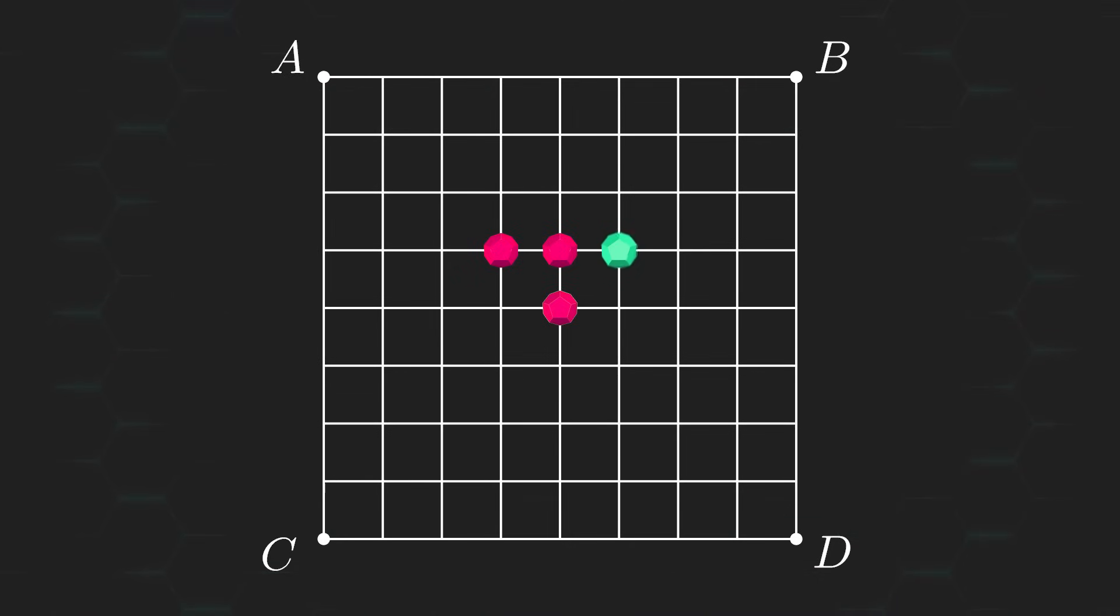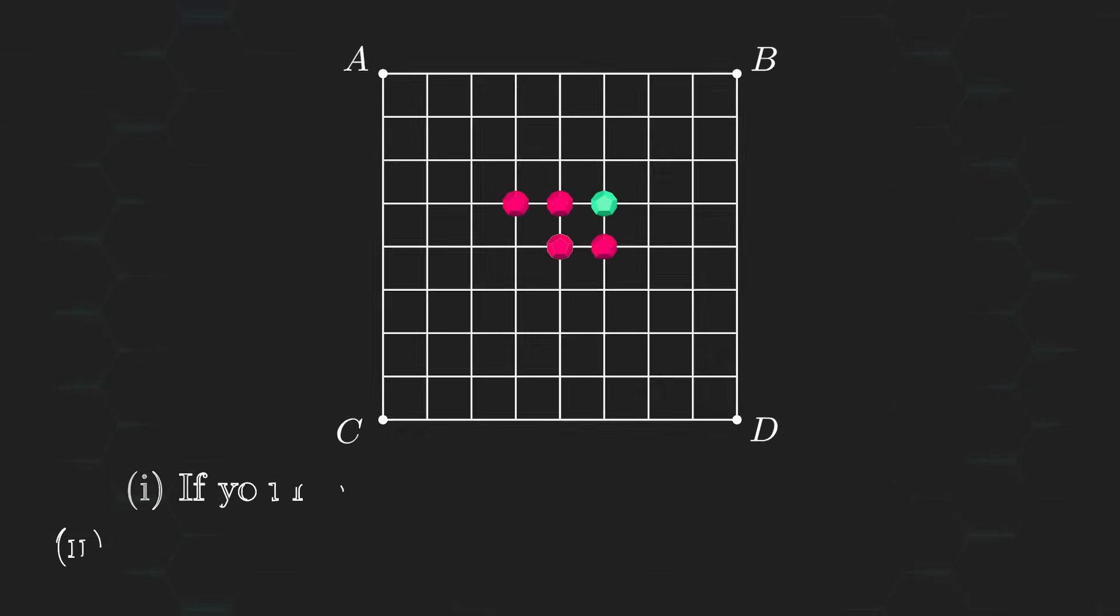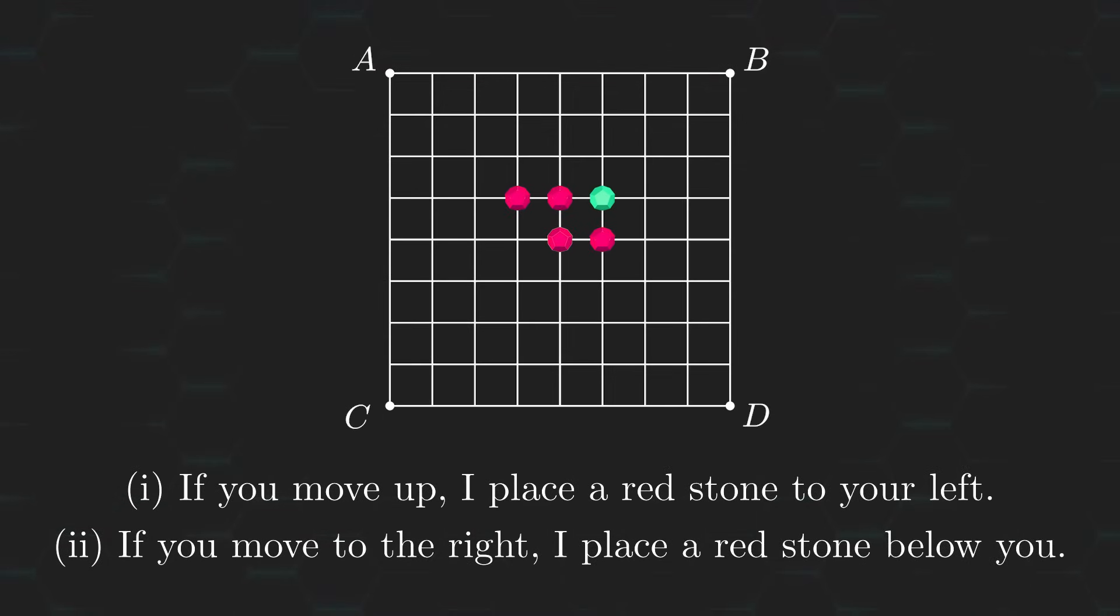So all I have to do is block one of the three remaining directions and leave you with the two that bring you closer to the doomed corner. The following strategy shows how I can keep restricting your movement in this way and force the greenstone to eventually end up on corner B.